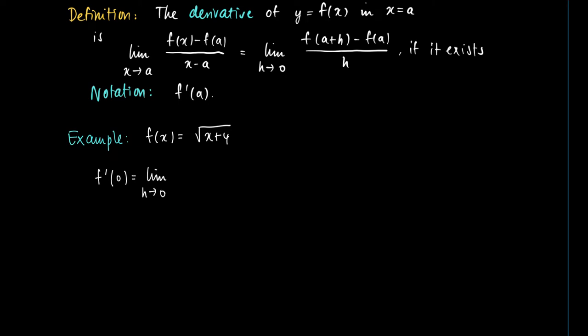By definition, this equals the limit of h to 0 of the square root of 4 plus h minus 2, which is f(0), divided by h, the step size.